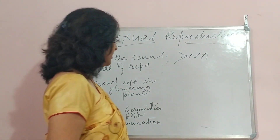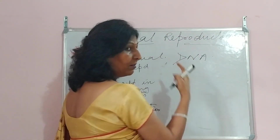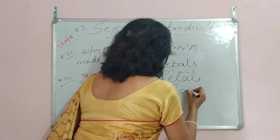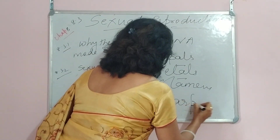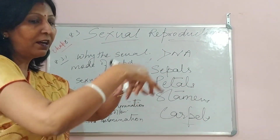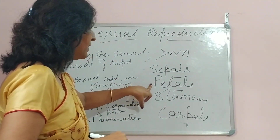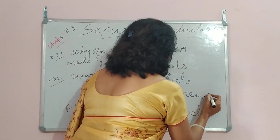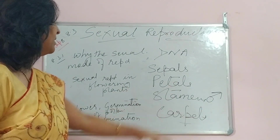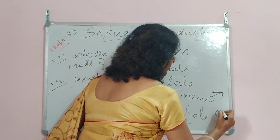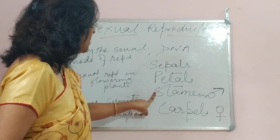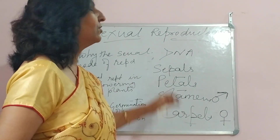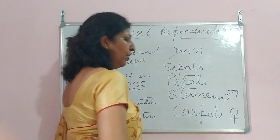Next we come to sexual reproduction in flowering plants. When we talk about a flower, what are the different whorls? We have sepals, we have petals, we have stamens, and we have carpels. Sepals are the green parts just outside the petals. Petals are the colourful ones which attract insects and other organisms and help in pollination. Stamen is the male reproductive part of a flower. Carpel is the female reproductive part. In the bud stage, sepals help in protection and also carry out photosynthesis because they are green in colour.